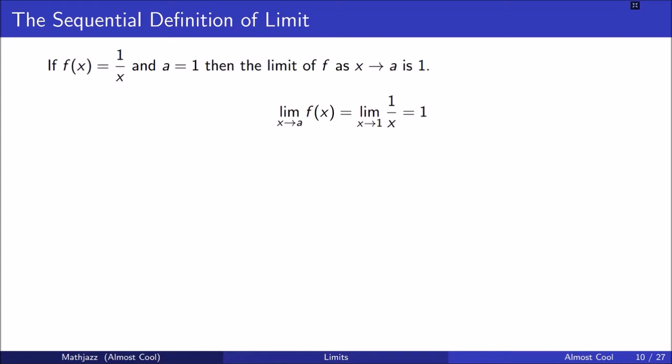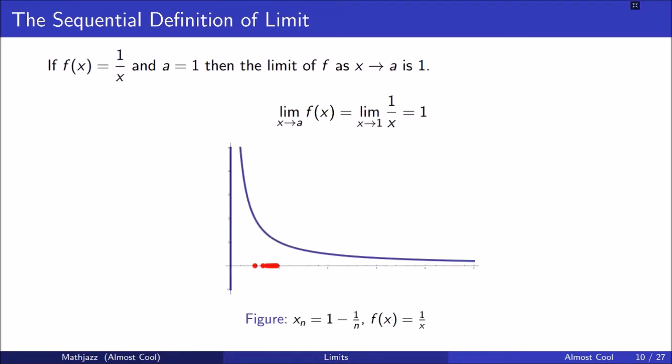If f(x) equals 1 over x and a equals 1, then the limit of f as x goes to a is 1, and I have that written as a series of equalities here. Here is a graph of the function. I have picked a sequence converging to 1, and we see these points get bigger and bigger towards 1. For this function and this point a, what we'll find is that f of these points must converge to 1.